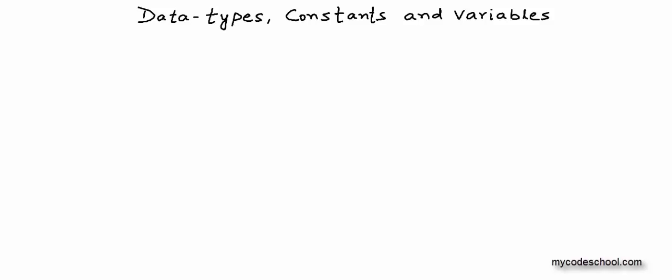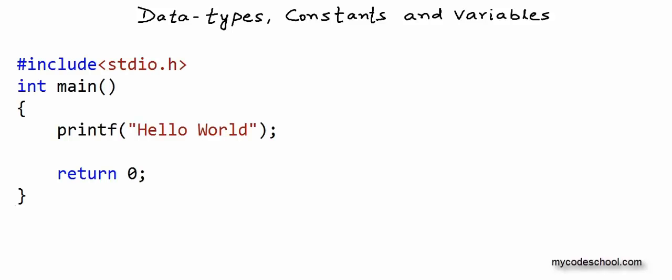In our previous lesson, we saw the basic structure of a C program by writing and executing a simple program to print hello world on screen. But printing hello world on screen is not doing something very meaningful. In a typical task that we would like to perform using a computer program, we will have some data and then we will have to perform some operations on these data. Let's try to understand this through an example.